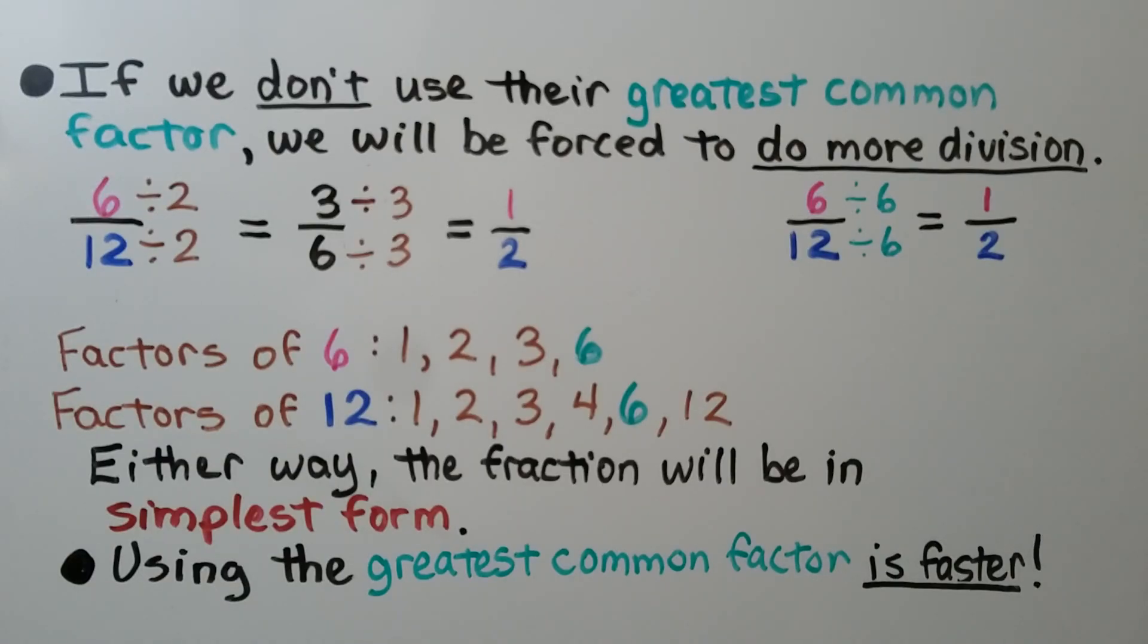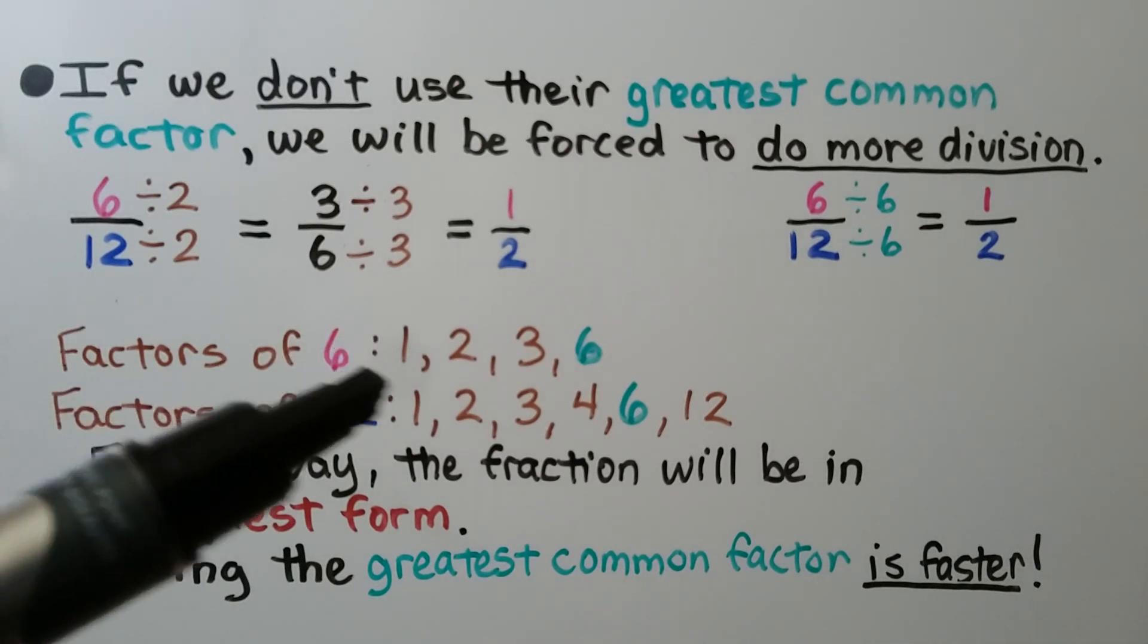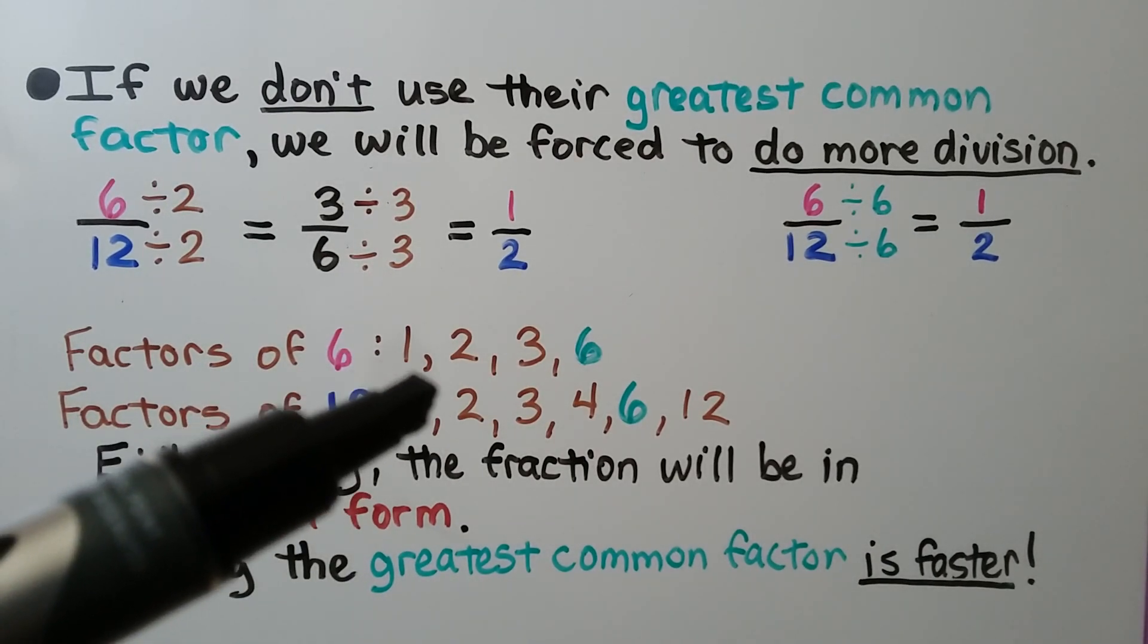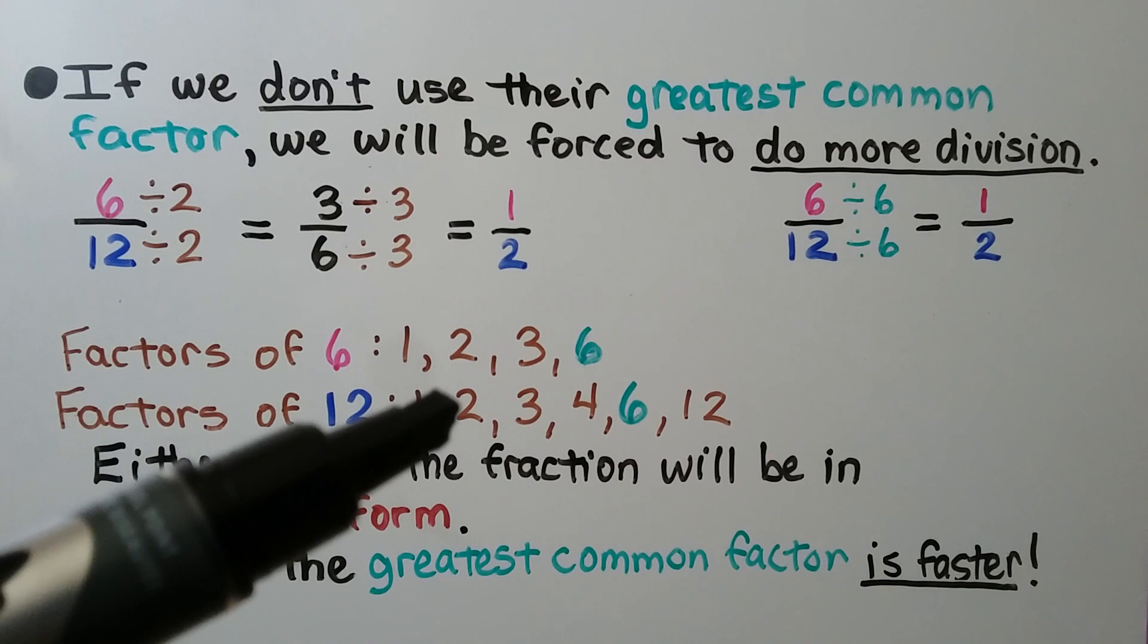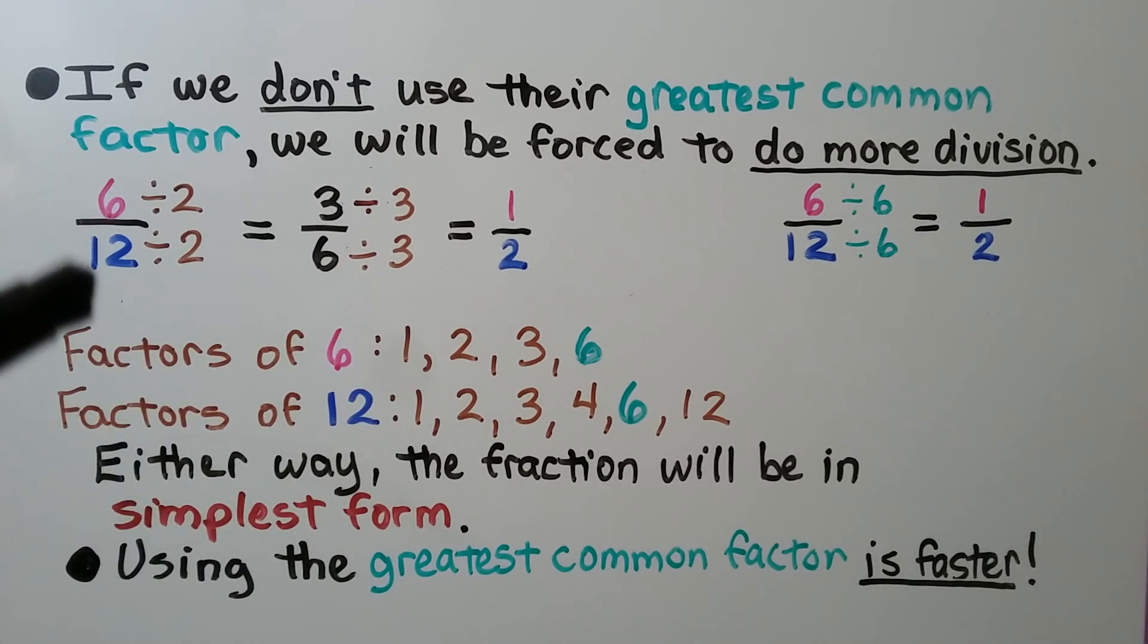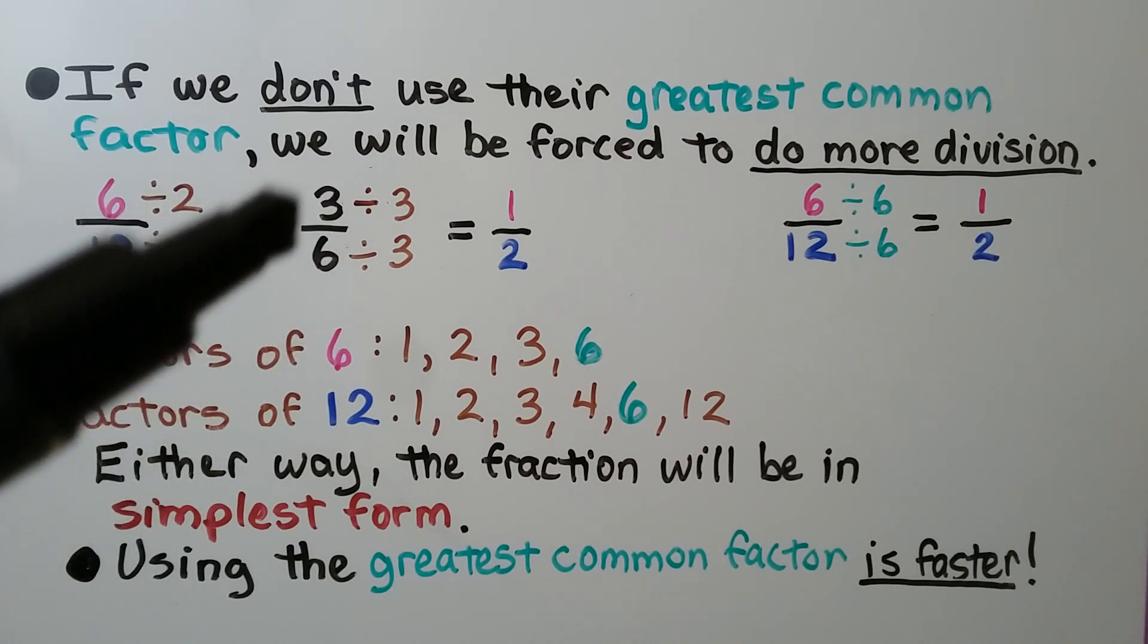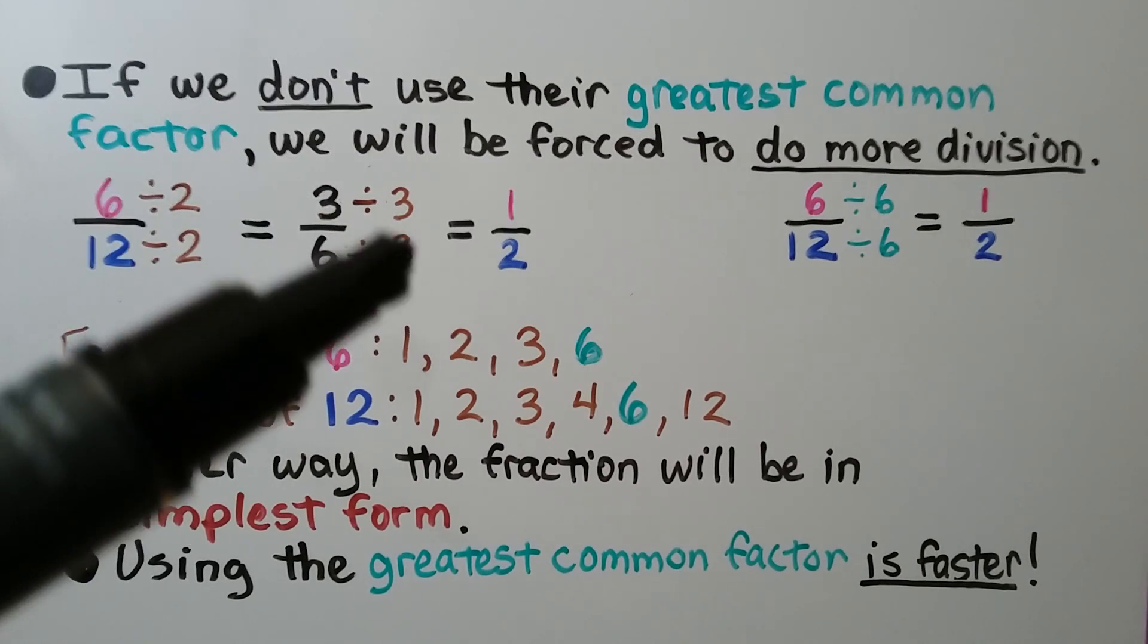If we don't use their greatest common factor, we will be forced to do more division. For six-twelfths, we can see they have the factors one, two, and three in common. They're not the greatest common factor, but they do have them in common. If we divide the numerator and denominator by two, we get three-sixths. And we'll have to divide again.